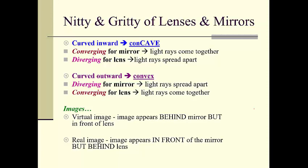When d_i is negative, the image is virtual. For a mirror, that means the image is behind the mirror, but for a lens, a virtual image is in front of the lens. When d_i is positive, the image is real. For a mirror, that means it's in front of the mirror, and for a lens it's behind the lens. So there are both similarities and slight differences when talking about lenses and mirrors.